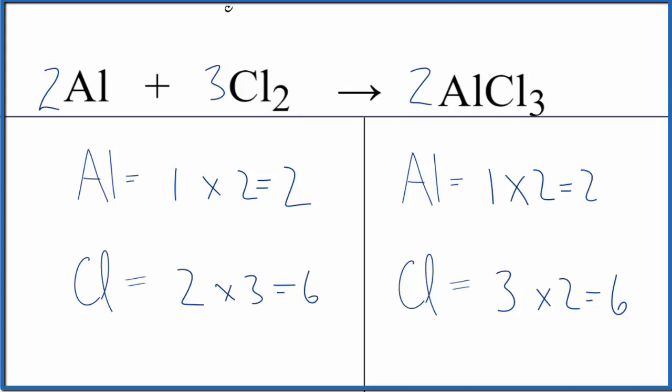If we wanted to write the states for this reaction, aluminum, that's going to be a solid. Chlorine, that's a gas. Cl2 is a gas. And then aluminum chloride, that would also be a solid.